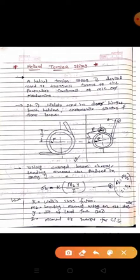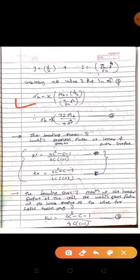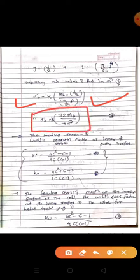Now we put the values of y and I into equation number one: sigma_b equals K into M_b into y divided by I. Substituting y equals d/2 and I equals pi/64 × d⁴, we get the final equation: sigma_b equals K × 32 × M_b divided by pi × d³. This is equation number 2.